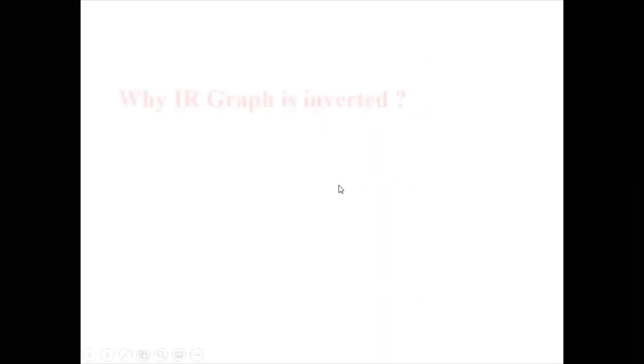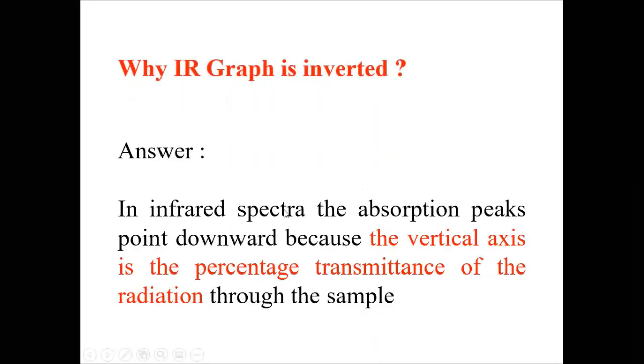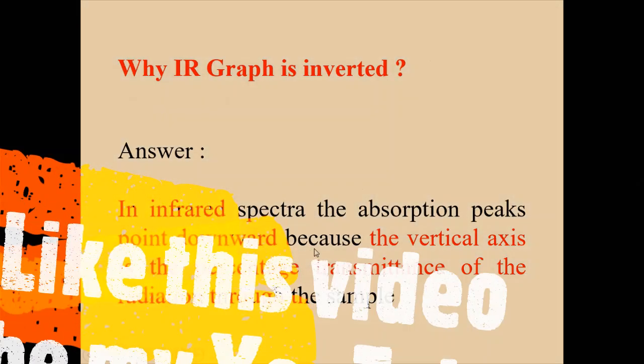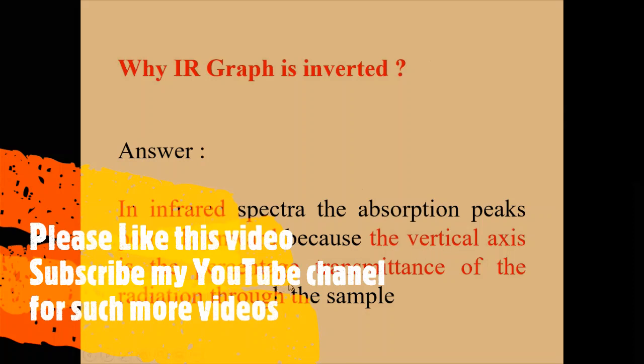So what is the answer to our question? In infrared spectra, the absorption peaks point downwards because the vertical axis is the percentage transmittance of the radiation through the sample. I hope now everyone is very clear about that, and whenever you face interviews you can give the answer easily. Thank you for listening.